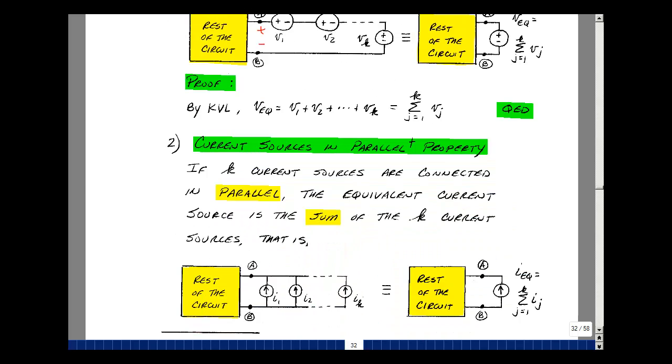How about parallel combinations? This is the next property, current sources in parallel. If I take k ideal current sources and connect them in parallel, the equivalent current source is the sum of the k current sources. Show them all pointing up. And again, some of these could be negative. But let's find an equivalent current, say entering this box.